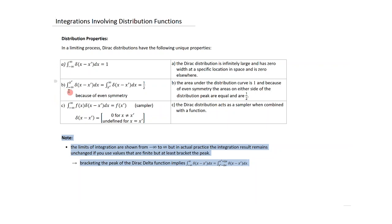Another property involves even symmetry. If we integrate from minus infinity to x prime, and separately from x prime to infinity, these two integrals are identical — each capturing half of the area under the Dirac delta distribution. Since the total integral from minus infinity to infinity is 1, integrating from minus infinity to x prime gives a value of one half.